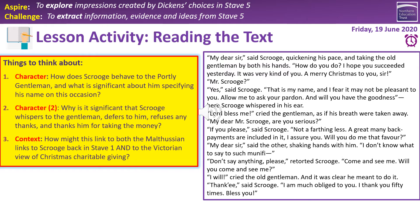Character: how does Scrooge behave to the portly gentleman, and what is significant about him specifying his name? He's terribly polite right from the start — 'My dear sir,' he addresses him. 'How do you do?' — showing interactivity. 'I hope you succeeded yesterday,' remembering him, being polite. He wishes him Merry Christmas and calls him Sir. Every part of what Scrooge is saying is polite, open, generous, considerate. He's very, very careful to be clear that it is him — 'Yes, that is my name.'